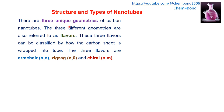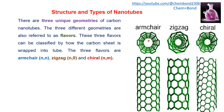Graphene is two-dimensional, and when rolled up it produces a one-dimensional carbon nanotube structure. There are three unique geometries of carbon nanotubes, also known as flavors. These three flavors are classified by how the carbon sheet is wrapped into a tube, and they are known as armchair, zigzag, and chiral carbon nanotubes.